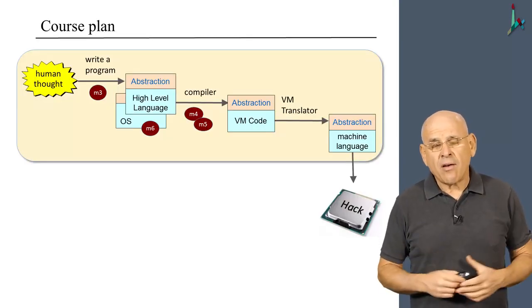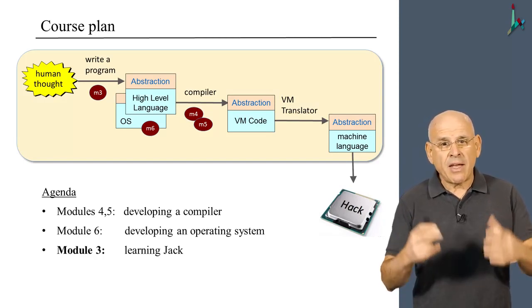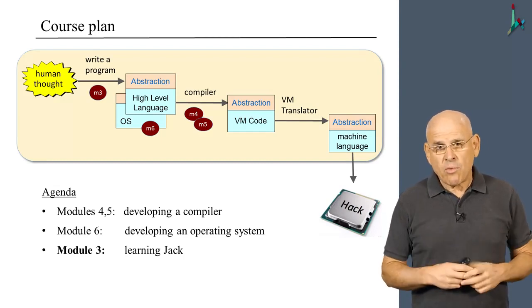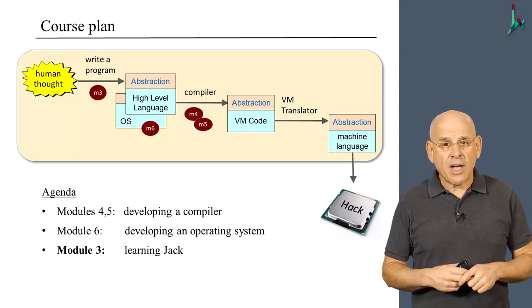And here's also the agenda of what we should expect from now on. And this is the beginning of the end of the course. And we see that in the next two modules, in module four and five, we're going to build the Jack compiler.